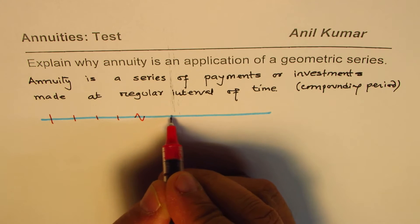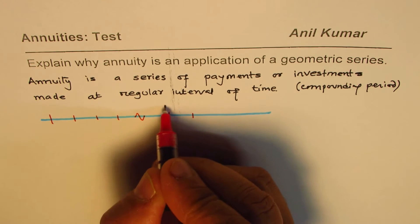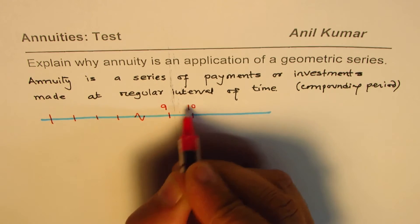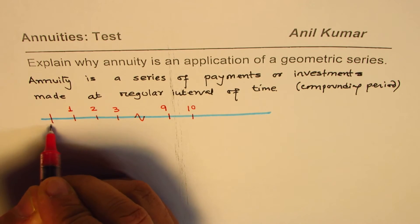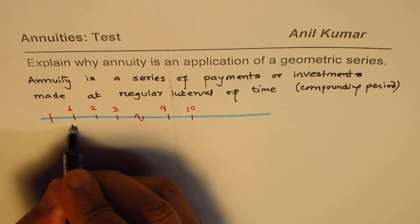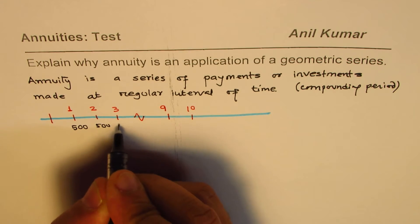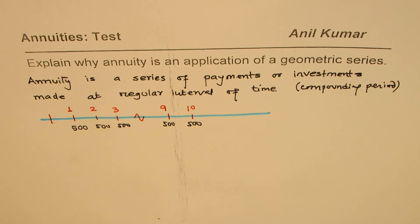You make investments till, say, ten years — so we have year nine, year ten. At the end of year one, year two, year three, and so on, if you deposit $500, each amount will be returned to you at the end of this cycle with interest.